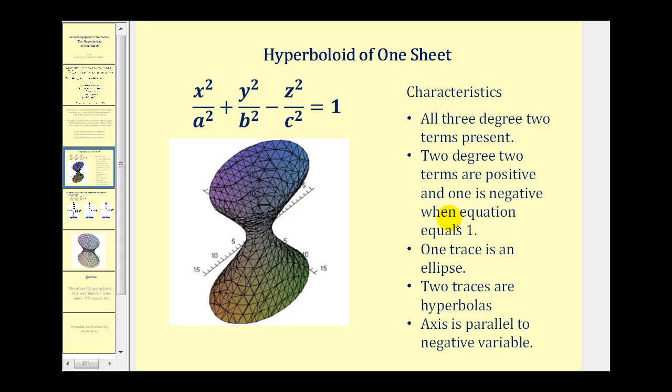When we take a look at the traces of a hyperboloid, one trace will be an ellipse. And the axis of the hyperboloid will be parallel to the axis of the negative variable. Notice the z term is negative and the axis is a vertical line.